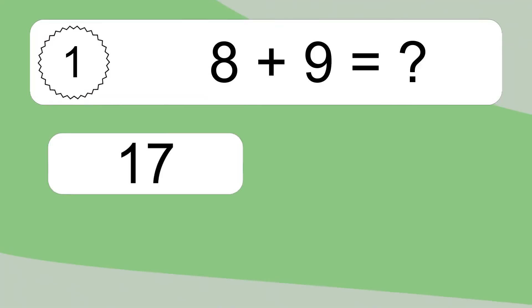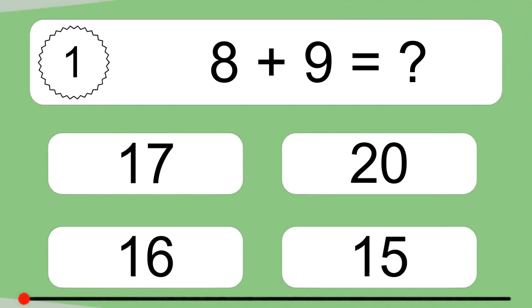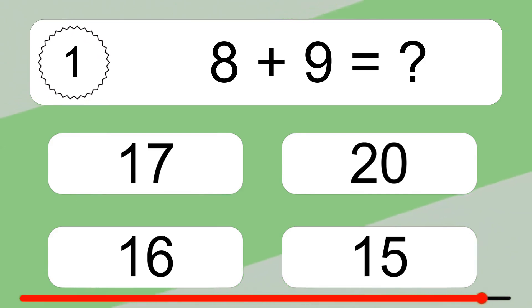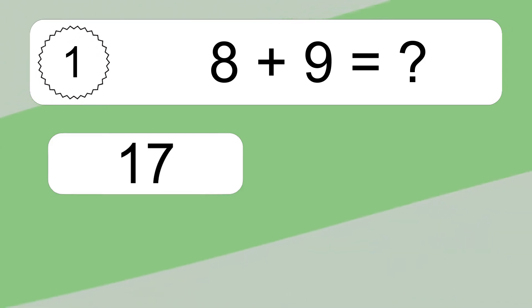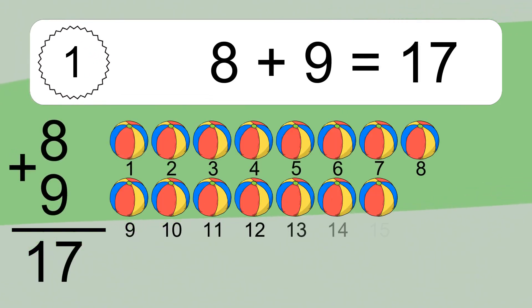8 plus 9 equals what? 8 plus 9 equals 17.